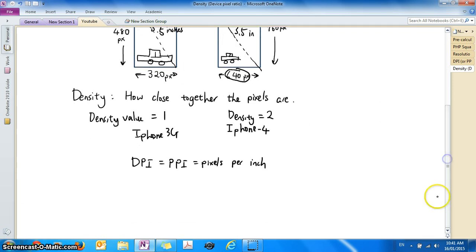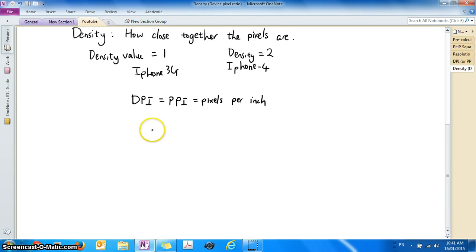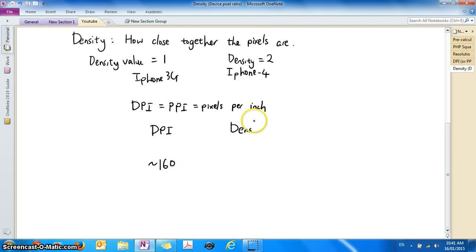Alright, now iPhone 3G which is this device here has a DPI of 163. Okay, so what happens is if a phone has a DPI value of around 160 then the density value we say is 1. Okay, 160 DPI equals the density value of 1.